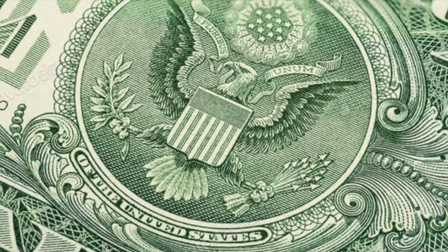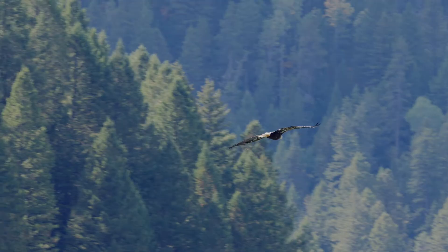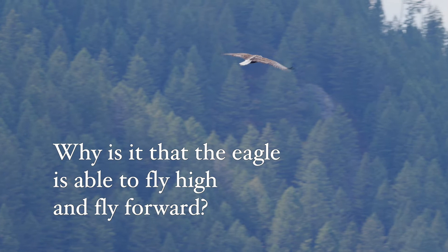He said, "Why is it that the eagle is able to fly high and fly forward? It's because it has two wings — a left wing and a right wing." Enough said. Every time I recite the Pledge of Allegiance at a ball game, a concert, or a conference, I always get chills when we come to the part that says, "One nation, under God, indivisible, with liberty and justice for all."